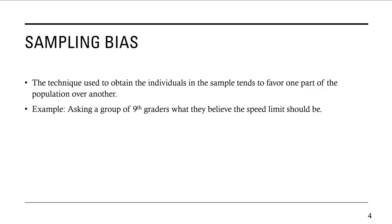Sampling bias occurs when the technique used to obtain the individuals in the sample tends to favor one part of the population over another. For example, if you ask a group of ninth graders what they believe the speed limit should be, this is definitely sampling bias — first of all, you're asking ninth graders who most likely aren't even driving yet. So you have over-representation of those who probably don't even have a driver's license and an under-representation of those who are actually on the roads driving. You're asking the wrong people, so you have a sampling bias.